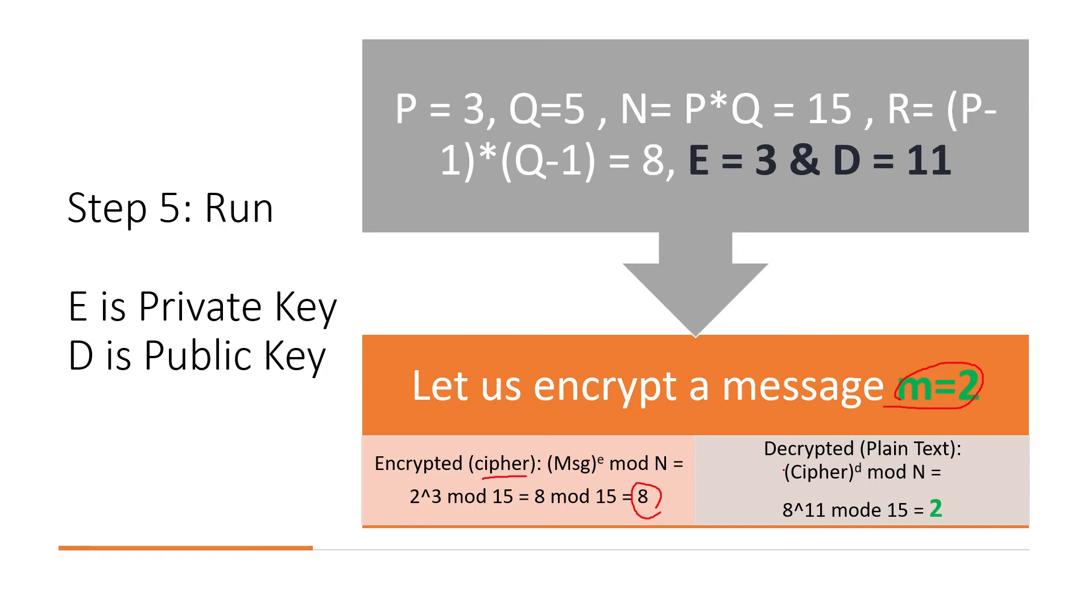When it reaches to the receiver end, you use your private key now to decrypt. When it reaches to your receiver side, you're gonna replace this formula with cipher exponential D modulus N. So cipher value is 8 that you put here, then the D value is the public key that is 11 that you're gonna put here. Then 8 exponent 11 modulus of 15. 15 is the value of N. That will give you what exactly the message was. If you try any other number, you will not get this value.